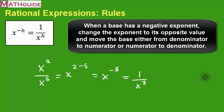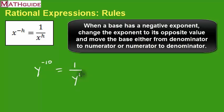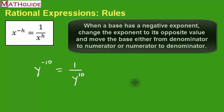Let's try another problem. Another problem we could do, and a shortcut would be, let's say we've got y to the negative 10th. That just means you have 10 copies of y, except they're in the denominator.